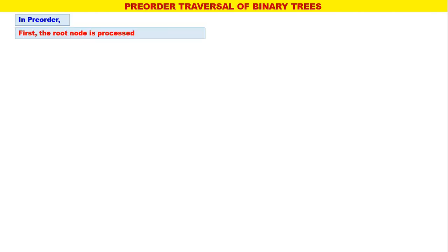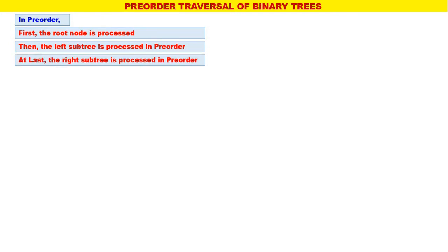My dear students, in this video we will find the pre-order traversal of a given binary tree. In pre-order, first the root is processed, then the left sub-tree is processed in pre-order, and at last the right sub-tree is processed in pre-order. The name 'pre' means prior to the left and right sub-trees, the root is processed — therefore the name pre.